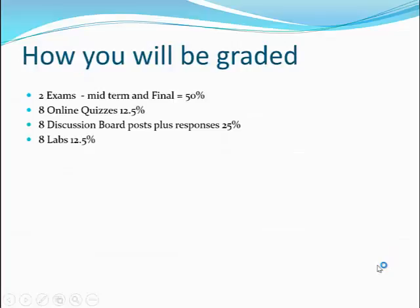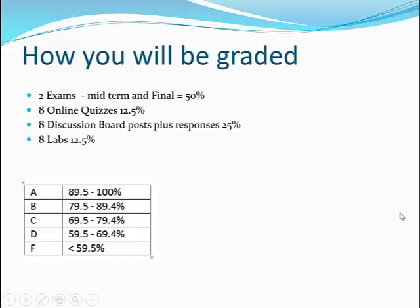For grading: you have two exams — a midterm and a final — each together worth 50% of the course grade. There are eight online quizzes worth 12.5%, eight discussion report posts including responses worth 25%, and eight labs worth 12.5%. The grading scale is: 89.5–100% is an A, 79.5–89.4% is a B, 69.5–79.4% is a C, 59.5–69.4% is a D, and under 59.5% is a failing grade.